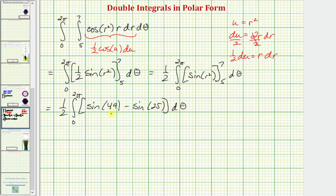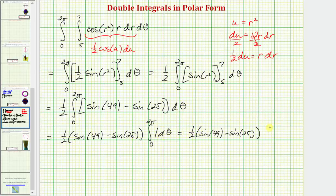And sine 49 minus sine 25 is a constant, so we could write this as one half times the quantity sine 49 minus sine 25, times integral from zero to two pi of d theta, which is going to give us the same constant, and then the antiderivative is going to be theta.